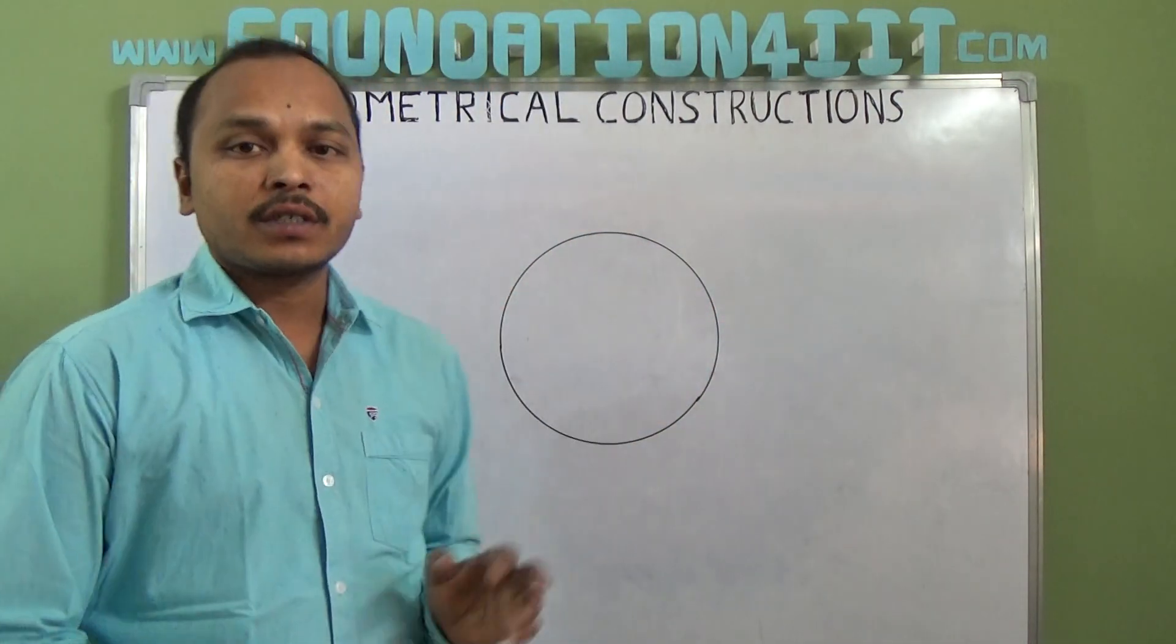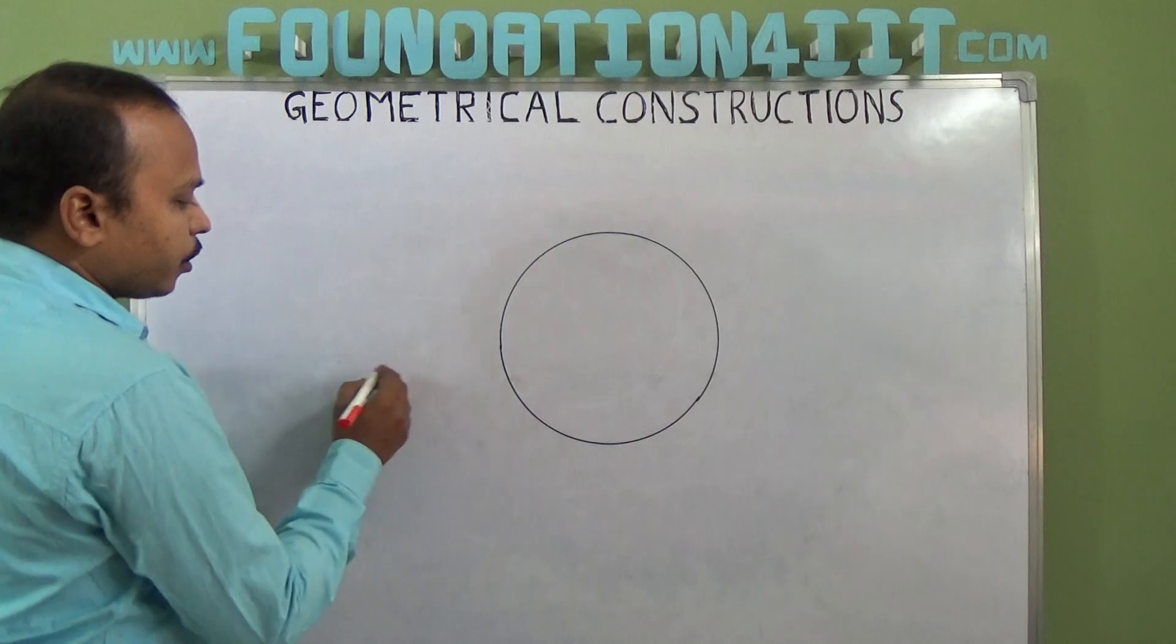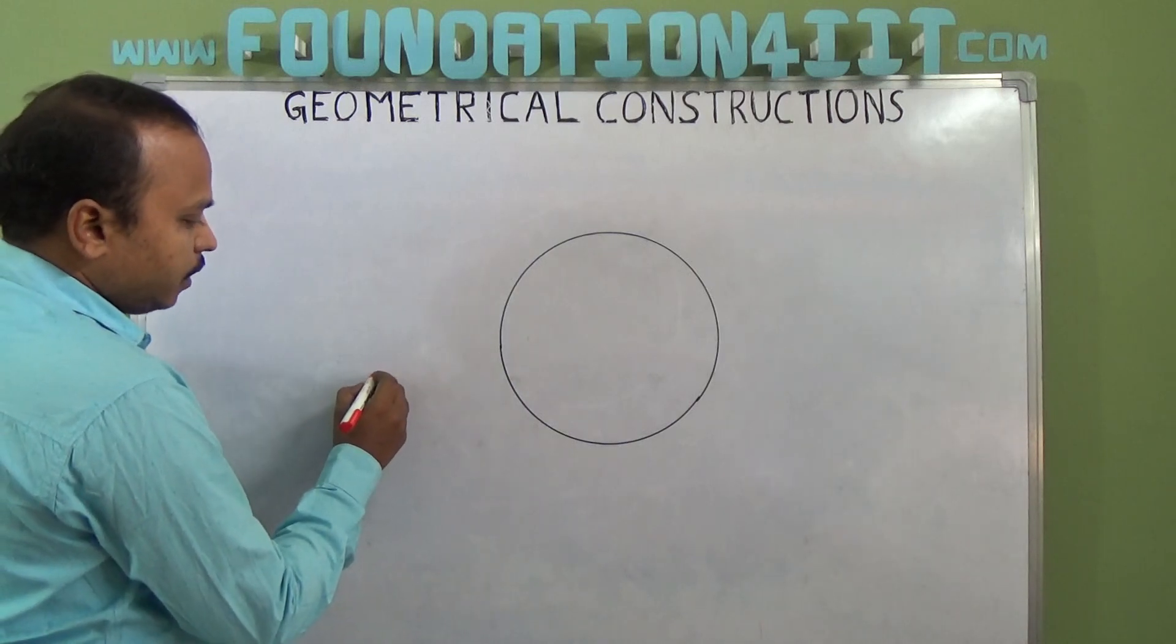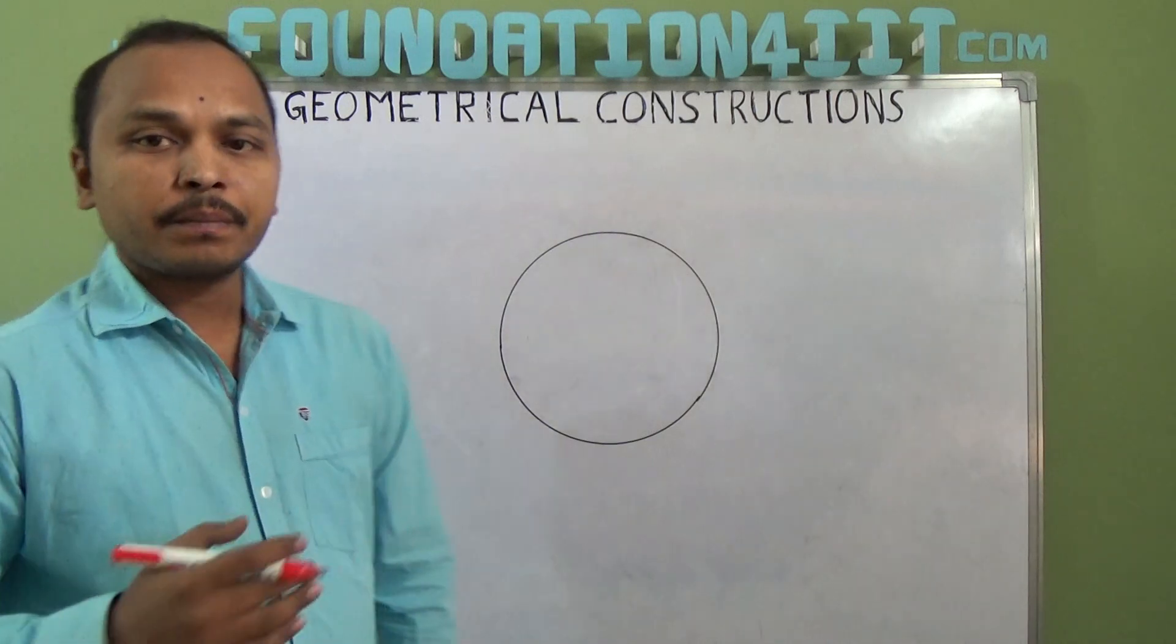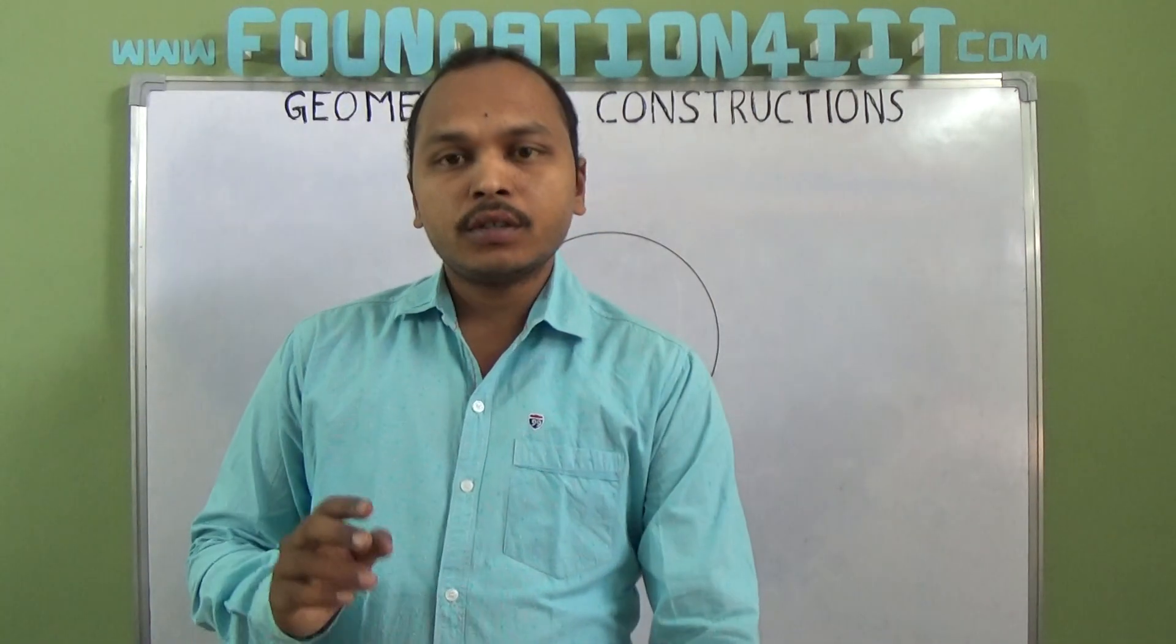Observe here, I just draw a circle. Now from external point, so point is P, from external point P I need to draw two tangents.